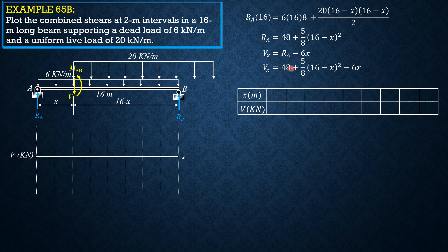When x is 0, shear is 208. When x is 2 meters, shear is 158. When x is 4, 114. When x is 6, 74.5 kilonewtons. When x is 8, 40 kilonewtons. When x is 10, 10.5 kilonewtons. When x is 12 meters, negative 14 kilonewtons. When x is 14, shear is negative 33.5 kilonewtons. And when x is 16, negative 48 kilonewtons, which is the reaction here, 48.